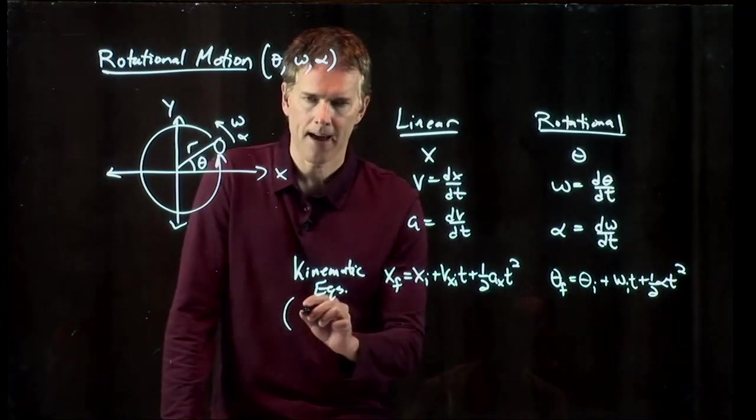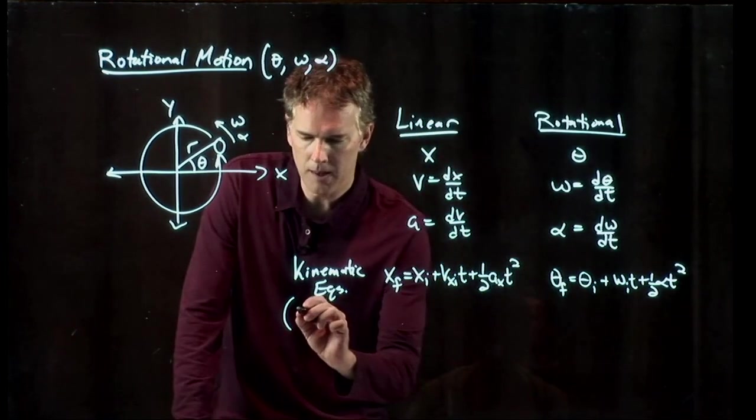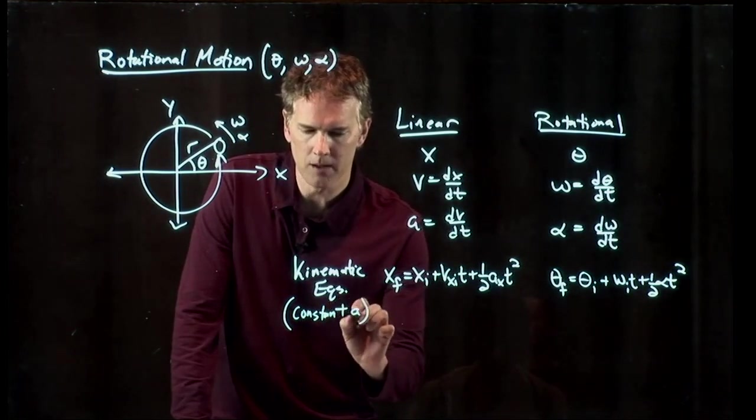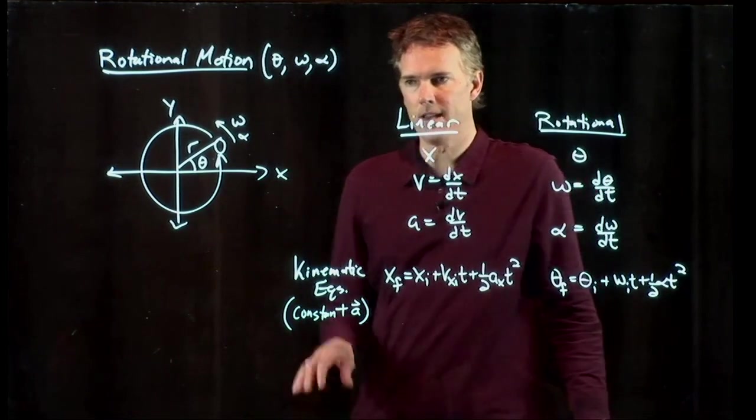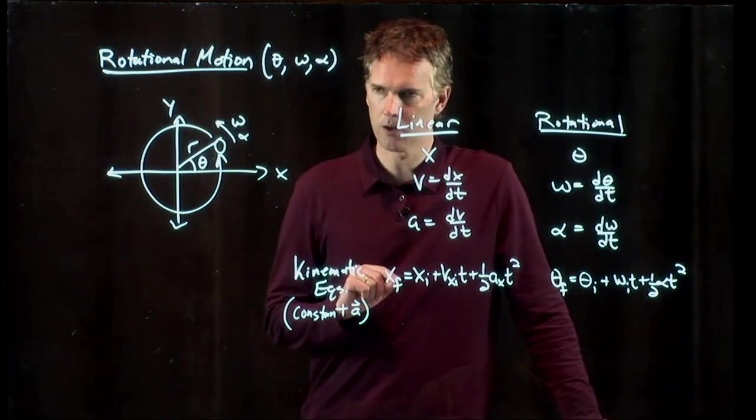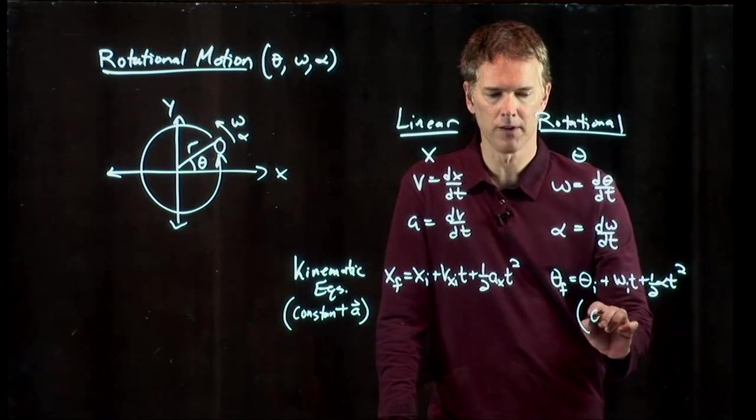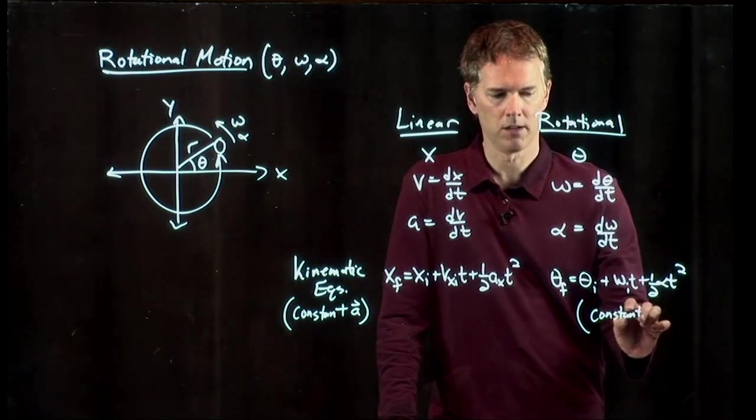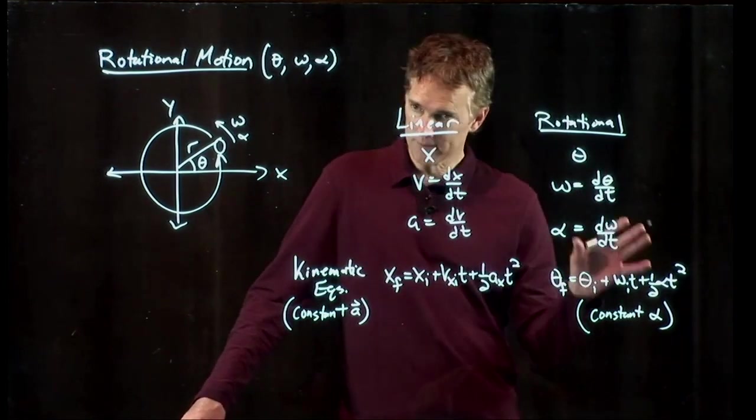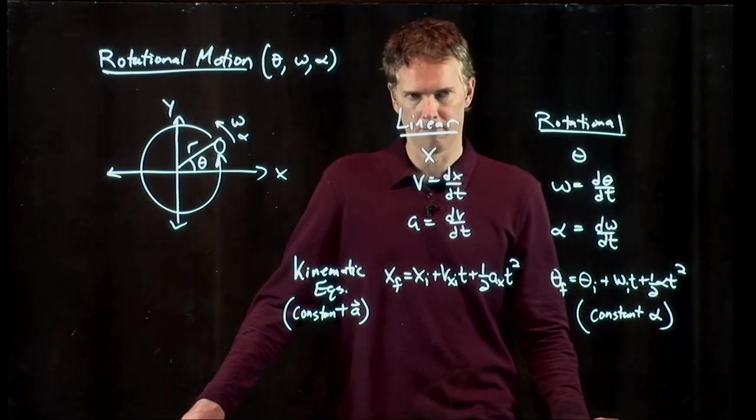Now there is a caveat with the kinematic equations. The kinematic equations apply when you have constant acceleration a. If your acceleration is not constant, then you cannot use the kinematic equations. And so we have to be careful when we write these equations down. The caveat is constant angular acceleration alpha. But if you have constant alpha, you can use all of those kinematic equations that we developed before.